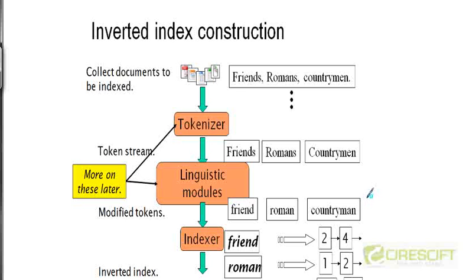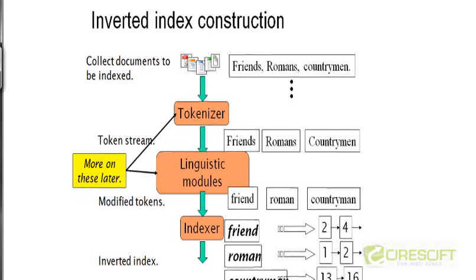We will now look at a high-level overview of the pipeline that is used to construct an inverted index in the first place. We will look at steps within this pipeline in more detail in future videos. For now we are just going to look at it from a high level — from a 30,000 feet perspective.